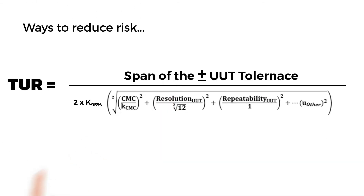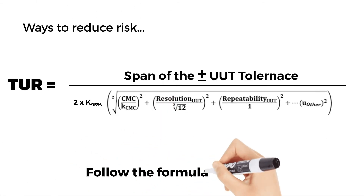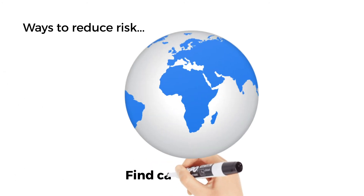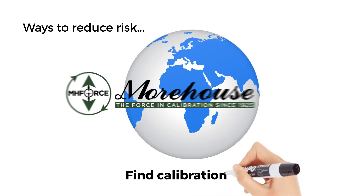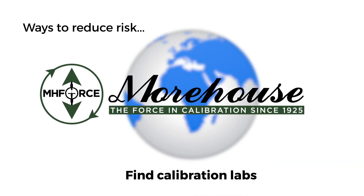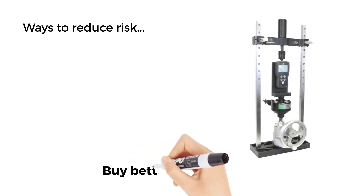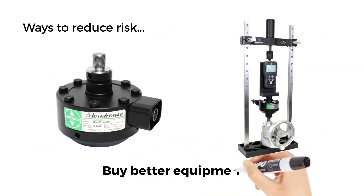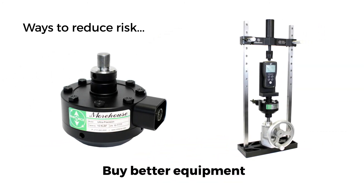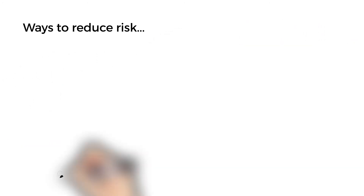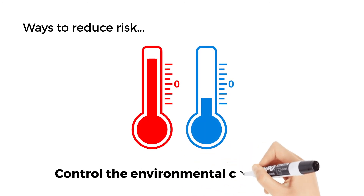The ways to reduce the risk are simple. Follow the formula for TUR. Find calibration labs such as Morehouse with the lowest measurement uncertainties. Buy better equipment that is repeatable and has enough resolution. Control the environmental conditions.